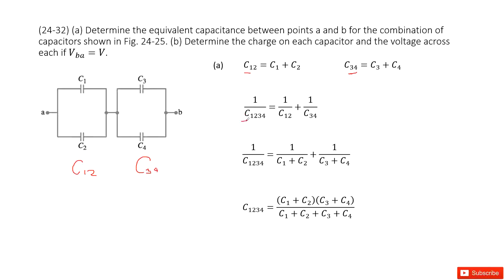Therefore, we write the equation for the equivalent capacitance C1234. This is a series connection, so we input C12 and C34 into the series equation. Converting the equation, we get the final answer for the equivalent capacitance of the circuit.